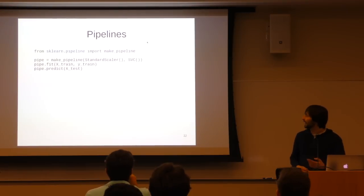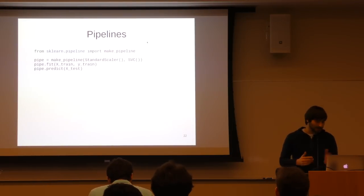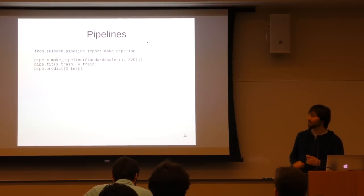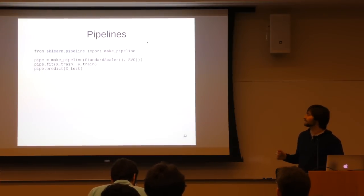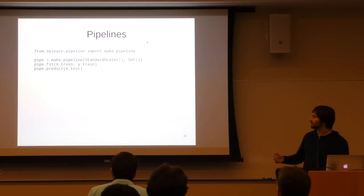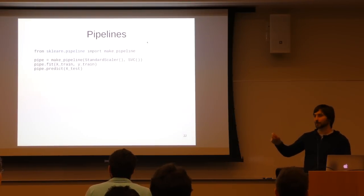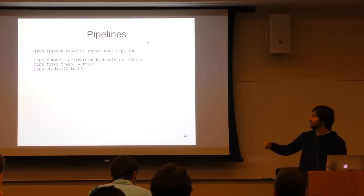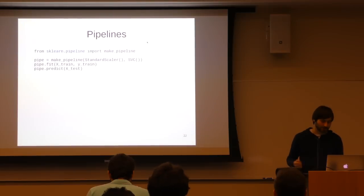The way to do this in scikit-learn is with pipelines. The make_pipeline function takes a list of estimators where the first ones have a transform method and the last one can be anything. A simple example: StandardScaler for mean removal and unit variance scaling, then a support vector machine. The pipeline will fit the first step, call transform, pass the transformed data to the second step, and so on — until it reaches the last step where it just calls fit.